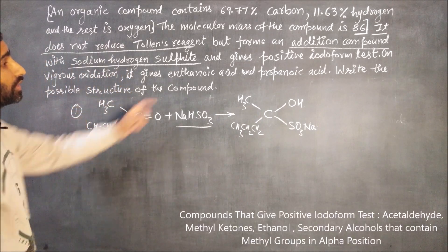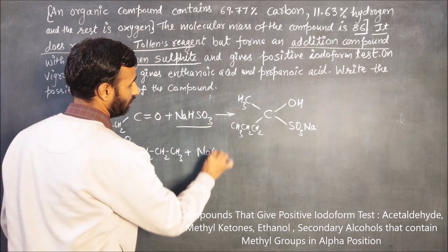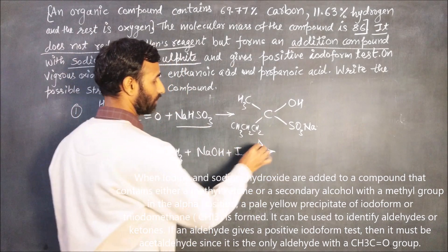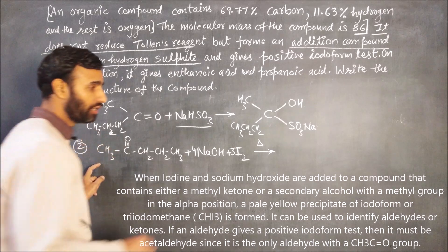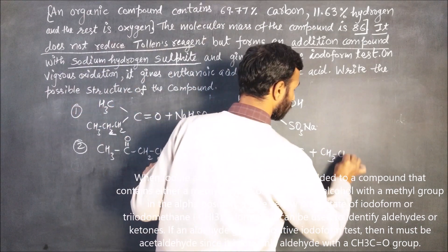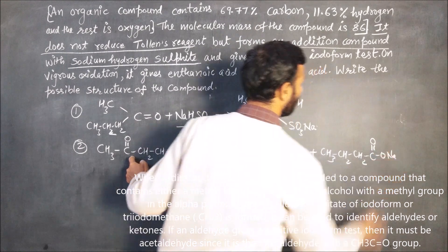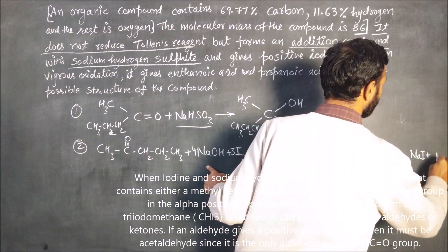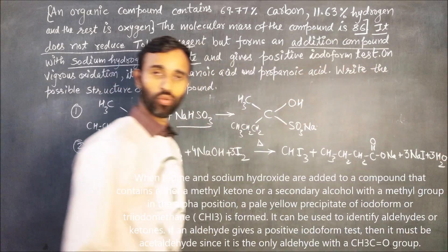Second, it gives positive iodoform test. In iodoform test, reaction with NaOH and I2. For NaOH and 3 I2, in this case CH3 gives iodoform and rest part forms sodium salt of carboxylic acid along with NaI plus H2O. So 3 NaI and 3 H2O.